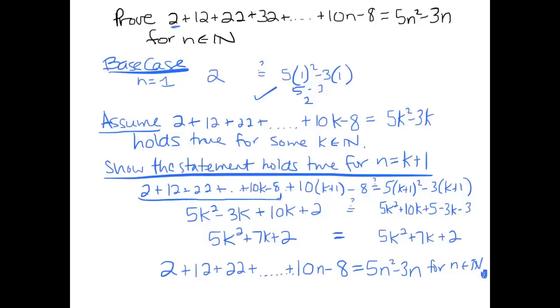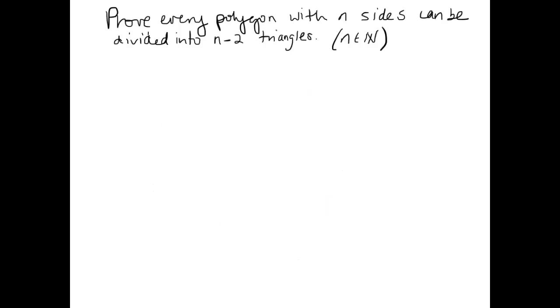Before you leave though, I just wanted to show you another example where the base case actually doesn't start with n equals 1. So in this situation, we want to prove that every polygon with n sides can be divided into n minus 2 triangles. Now if you don't believe that, just try any shape you want. I'm just going to try a quick pentagon right here. And if I draw in these diagonals, you'll notice that I took a pentagon that has 5 sides and I turned it into 3 triangles. So I have this intuition that this is actually a true statement. It's sometimes a good idea to just try examples to see if you even believe the statement before you try to prove it.